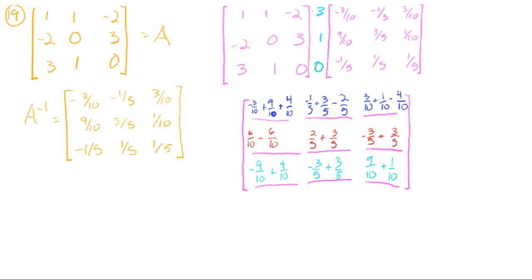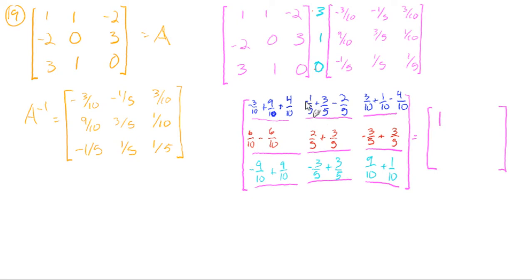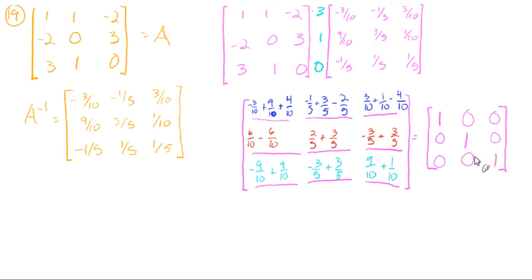So what is the result? Let's remember we're trying to show this times this — the matrix times the inverse — has to be the identity. Negative 3 tenths plus 9 tenths is positive 6 tenths, plus 4 tenths is 10 tenths, or 1. Negative 1 fifth plus 3 fifths is 2 fifths, minus 2 fifths is 0. 3 tenths plus 1 tenth is 4 tenths, minus 4 tenths is 0. 6 tenths minus 6 tenths is 0. 2 fifths plus 3 fifths is 5 fifths, or 1. Negative 3 fifths plus 3 fifths is 0. 9 tenths minus 9 tenths is 0. 9 tenths plus 1 tenth is 10 tenths, which is 1. We've verified that A times A inverse is the identity matrix.